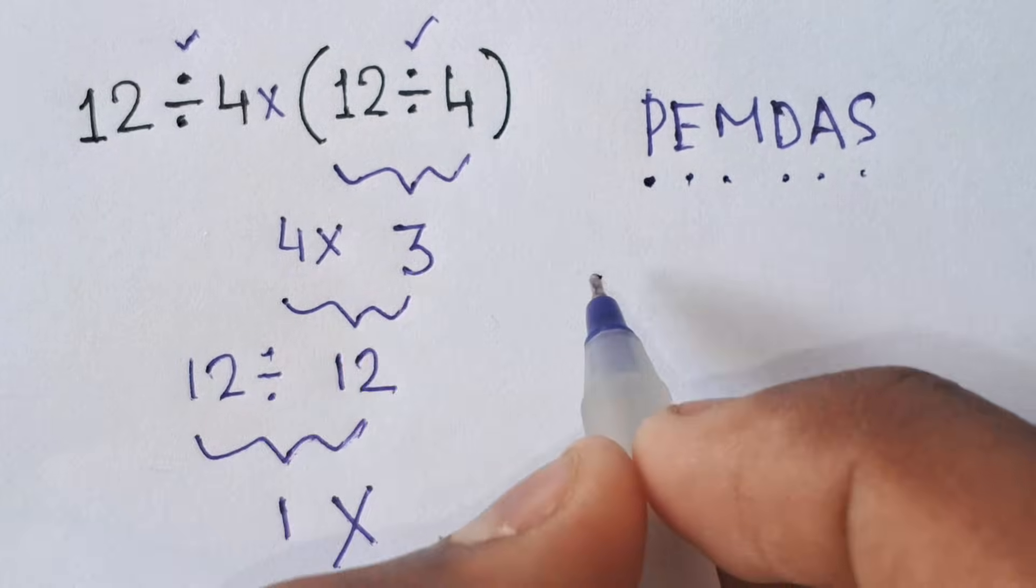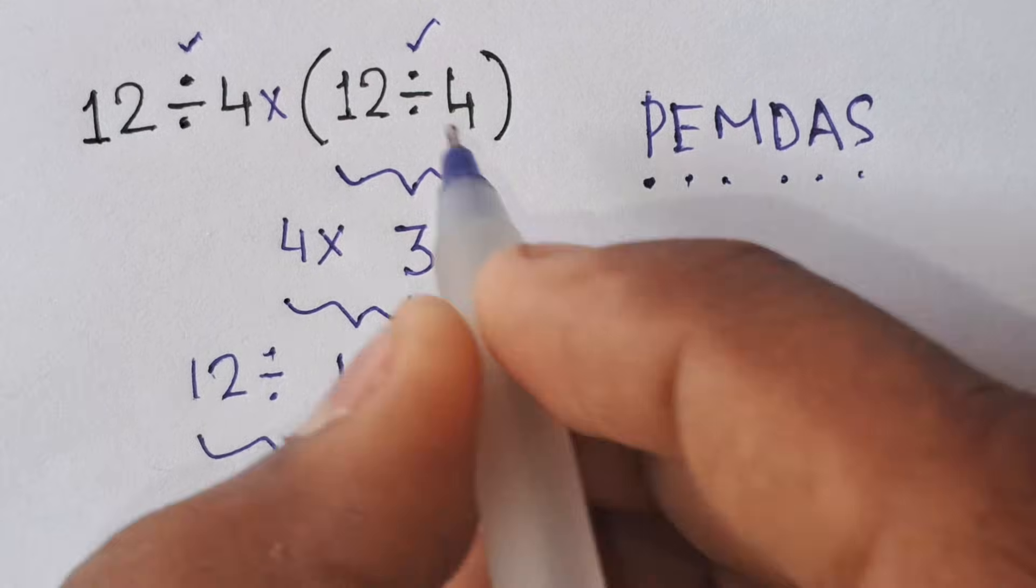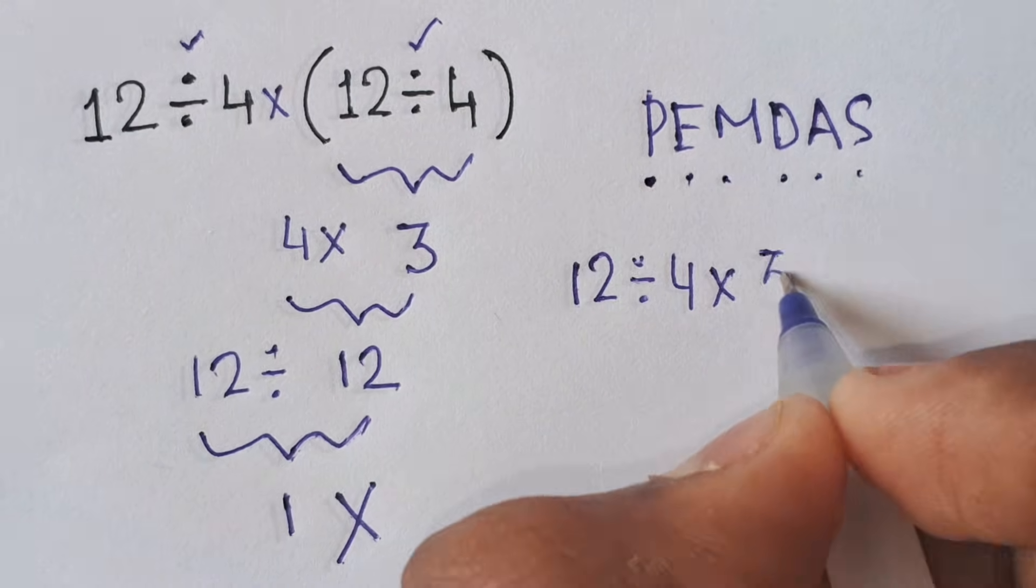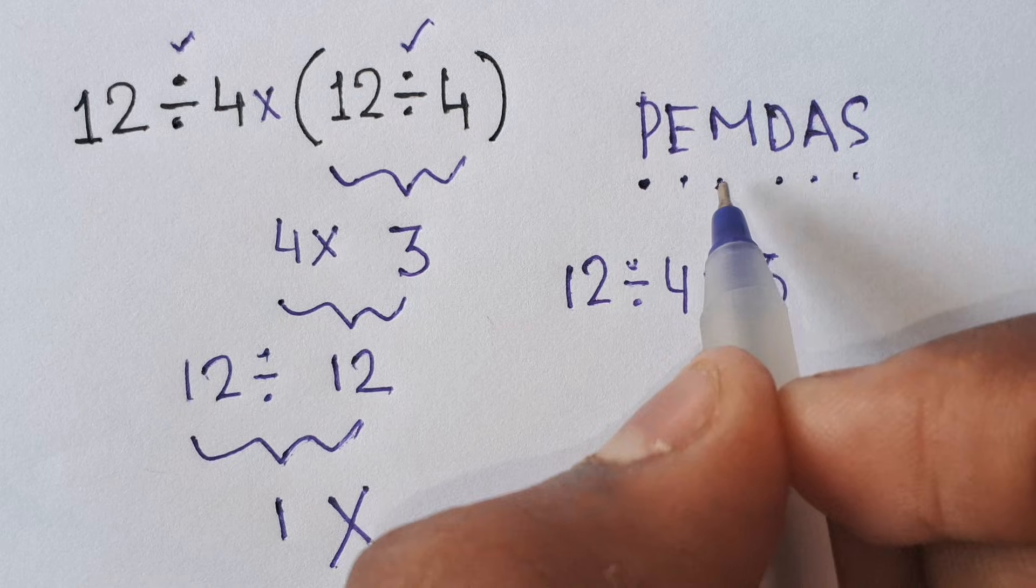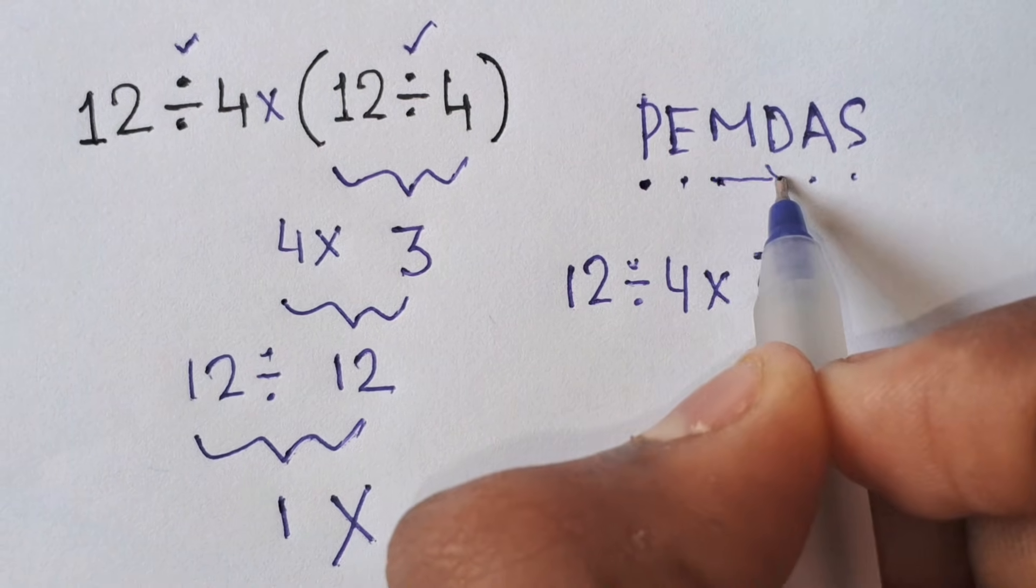So 12 divided by 4 times 12 divided by 4 equals 3. Now we have to remember that in PEMDAS rule, multiplication and division have equal priority and we have to solve them from left to right.